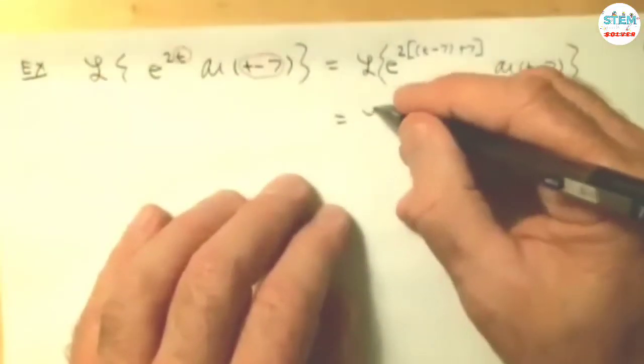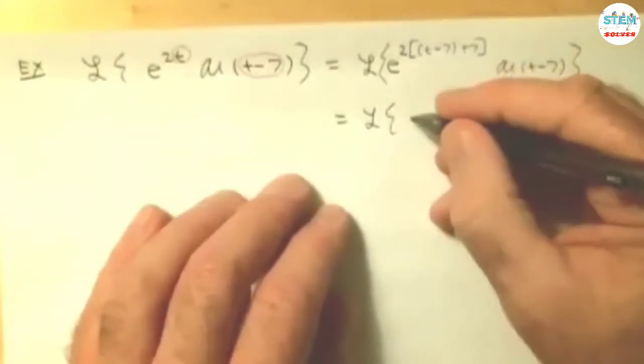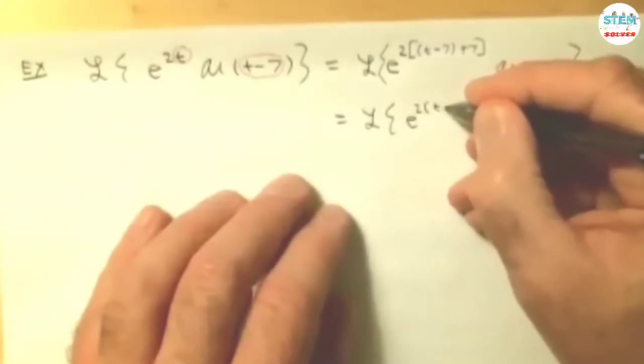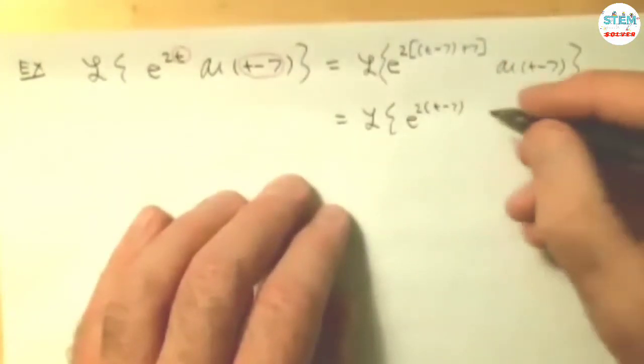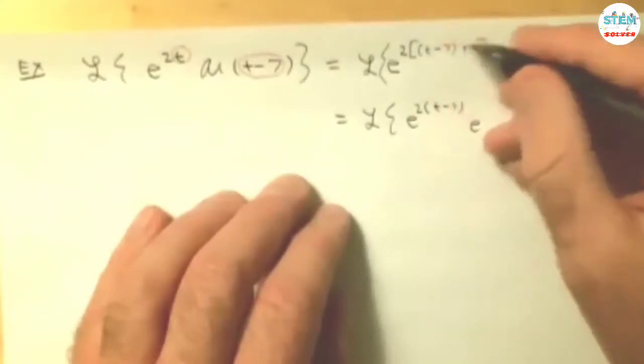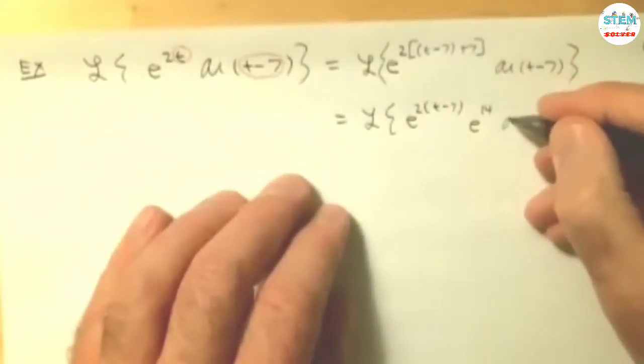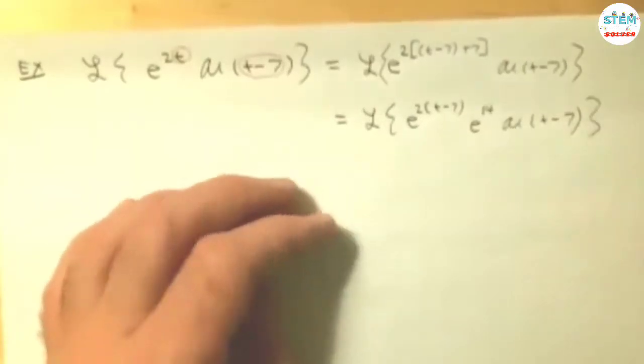I'm going to break this up. I'm going to add a couple steps here that you probably don't need to do, but just so it's clear to everyone, this is going to be e to the 2 times t minus 7, times e to the 2 times 7, which is going to be 14, u of t minus 7.